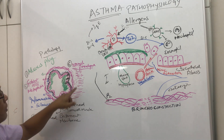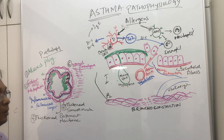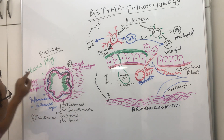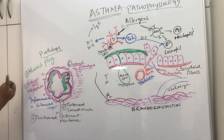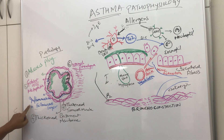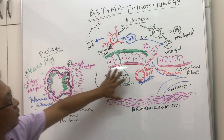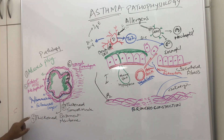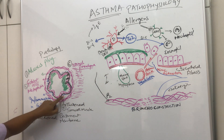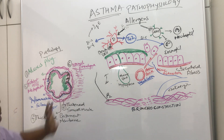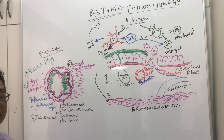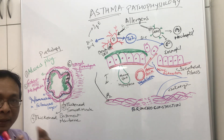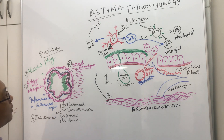So to summarize the pathology of bronchial asthma: number one is mucus plug; number two is goblet cell metaplasia; number three is inflammation in the submucous layer; number four is thickened basement membrane; number five is thickened smooth muscle; and number six is normal parenchyma. That is the pathology of bronchial asthma.